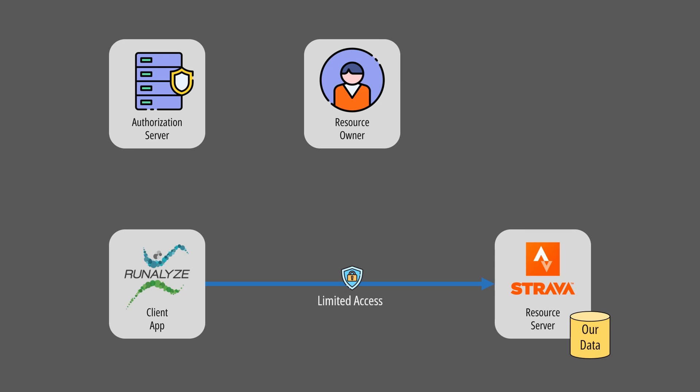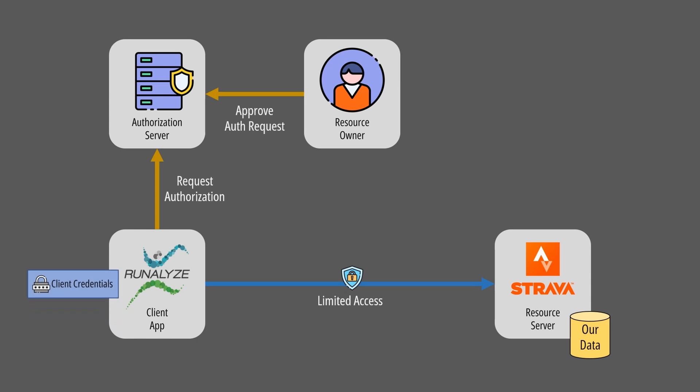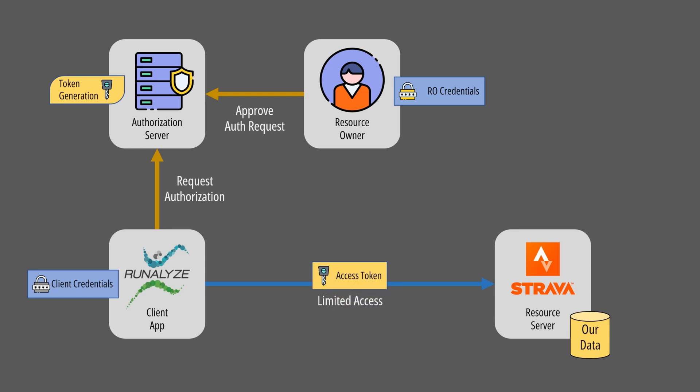Its goal is to act as an intermediary between us and the client application requesting access to our data. In this setup, the client application and resource owner have their own distinct credentials to identify themselves. However, the target API cannot be accessed with either of these credentials. The resource server API accepts only special access tokens that are created and signed by the authorization server. The access tokens necessary to access our data are issued only after our own approval.